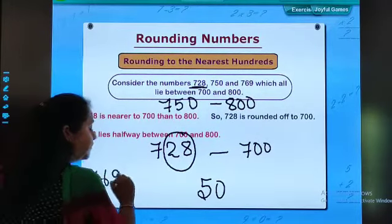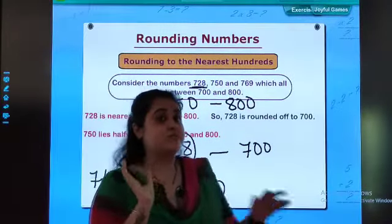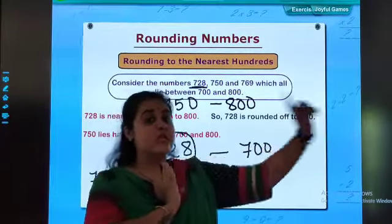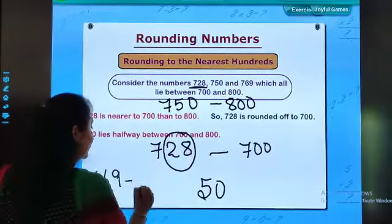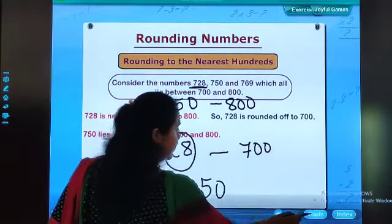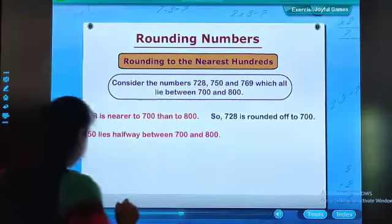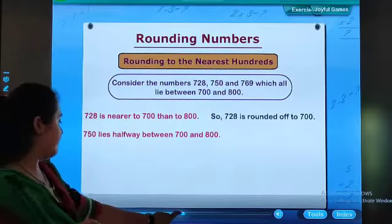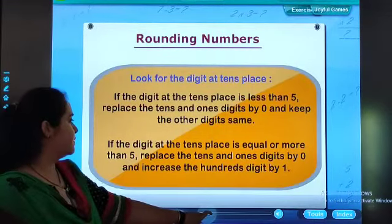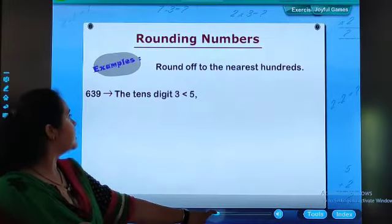What will be the round off of 769? 69 is more than 50, so we will be moving towards further. That means 800. Done. Easy. Understood. We have discussed this. Our answer also came. Nearest hundreds.